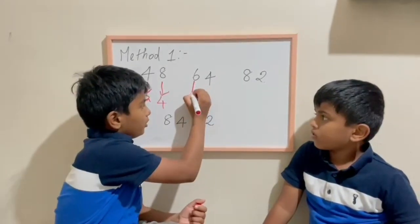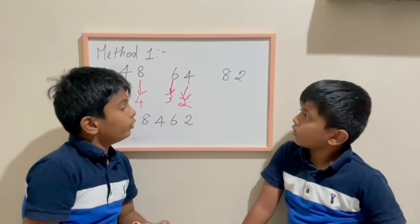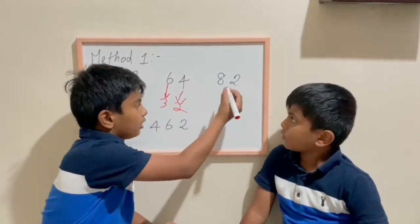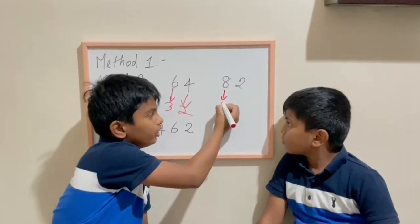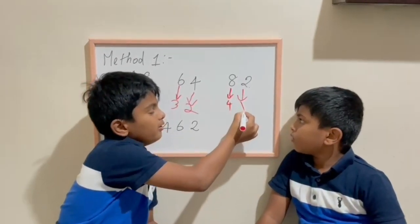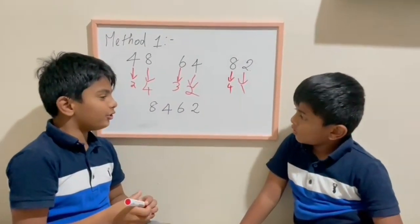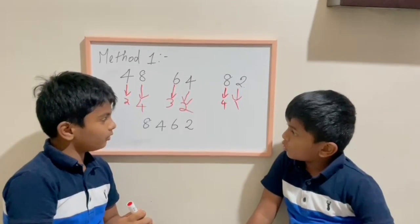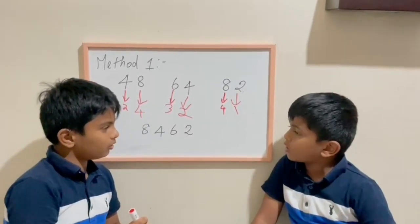So 64 half is 32. Correct. Same with that. Brave, 82. 41. Correct. 8 half is 4, 2 half is 1. 8462.